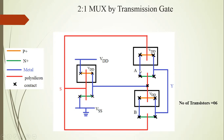A input is applied here and B input is applied here. This is an inverter. The S input is applied to the input of this inverter, and the output is S-bar. S-bar input is applied here. The red color means polysilicon material. VDD supply is applied to the N-MOS, and the P-MOS transistor substrate — the body of the P-MOS transistor — is connected to the 5V VDD supply.